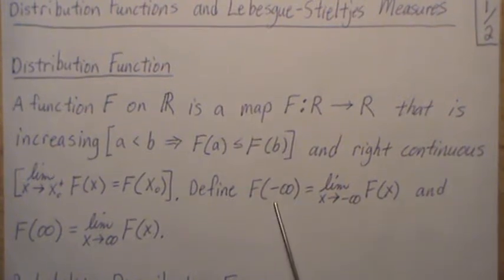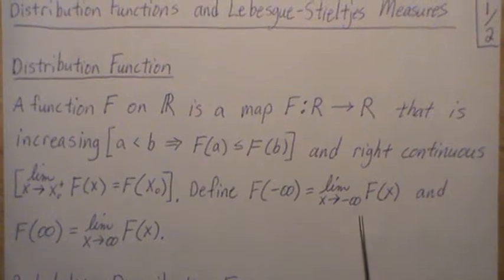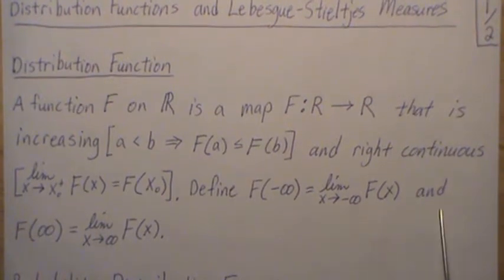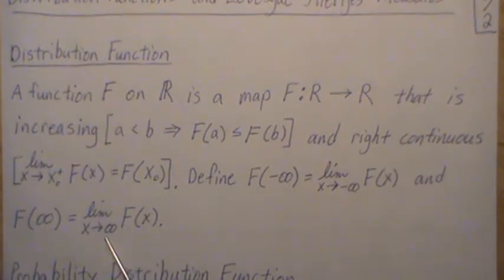We define this limit as x goes to minus infinity of F(x), we just stick in minus infinity here, and it really means it's the limit as x approaches infinity. The same way here, F(∞) is equal to the limit as x goes to infinity of F(x).